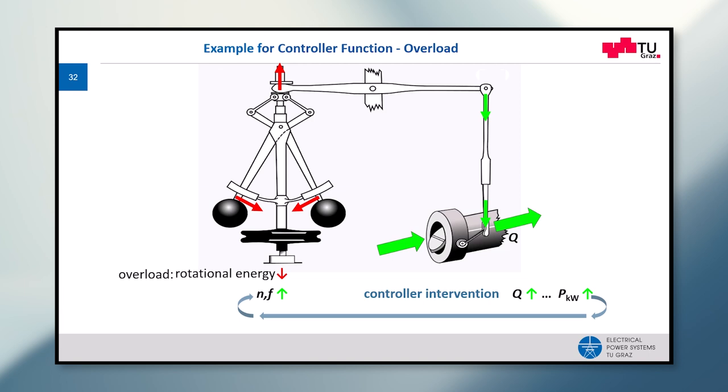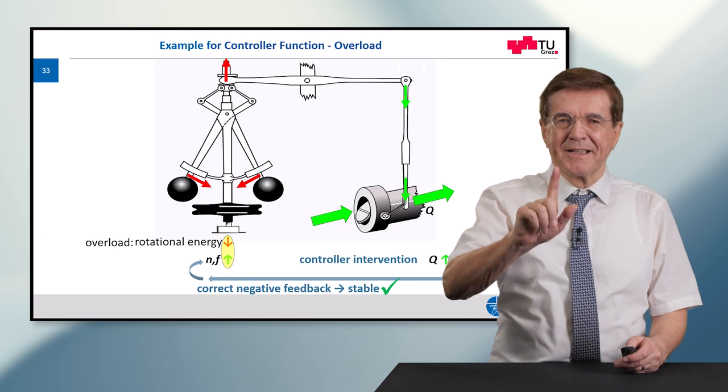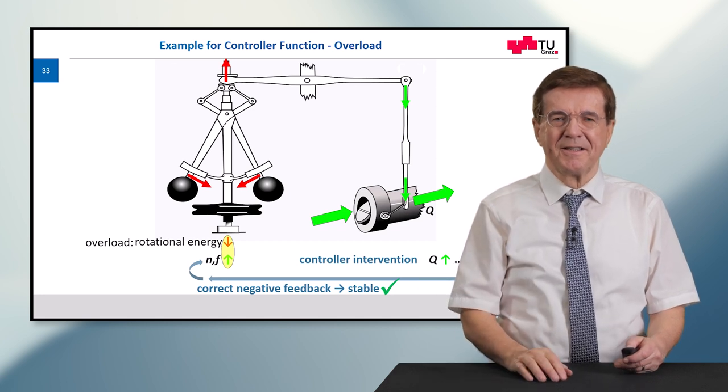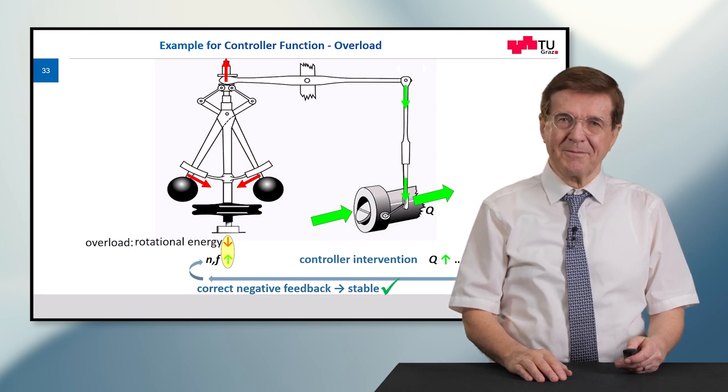This means now you see we come back to the beginning when we increase the input. This means the frequency, the speed, will go up. Now you see here, this is something like a little contradiction. The overload raises the speed, and this is called the negative feedback. If this is carried out in a correct way, the system is stable.